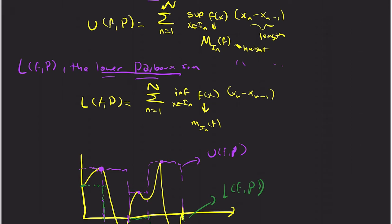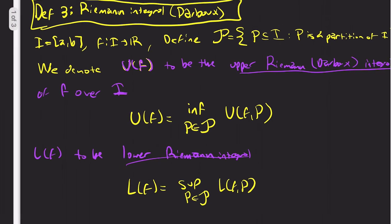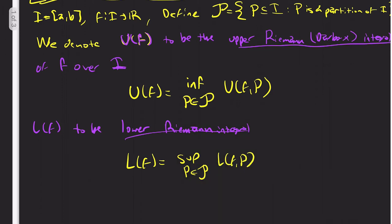Notice that the lower one you take the supremum, and the upper one you take the infimum. The reason is that clearly the upper sum is way different than the lower sum, but as you refine the mesh, the lower sum will increase and the upper sum will decrease. So you're taking the limit of a decreasing sequence — that's its infimum — and the limit of an increasing sequence will be its supremum. That's why it's a little backwards, so you have to be careful with your infimums and supremums here.